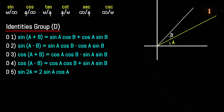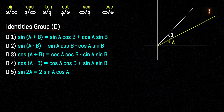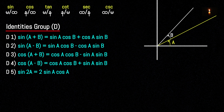Group D1. Group D1 to D5. D1: sin(A+B) = sinA cosB + cosA sinB. This is the identity for sin of A plus B.